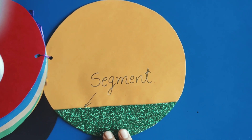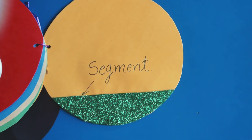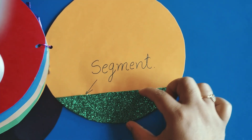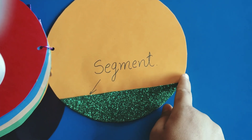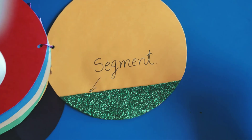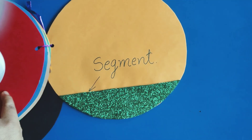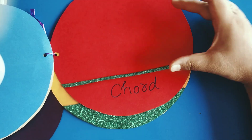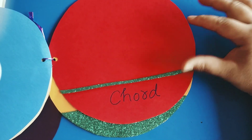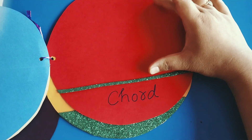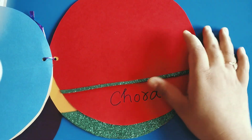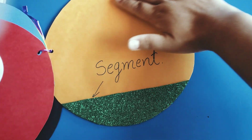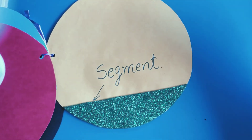The last part is the segment. In the case of a segment, we get a region. The region enclosed by the chord and the arc is known as a segment. Whenever we make a chord, we get two segments of the circle. The smaller portion is known as the minor segment, and the larger yellow portion is known as the major segment. Thank you.